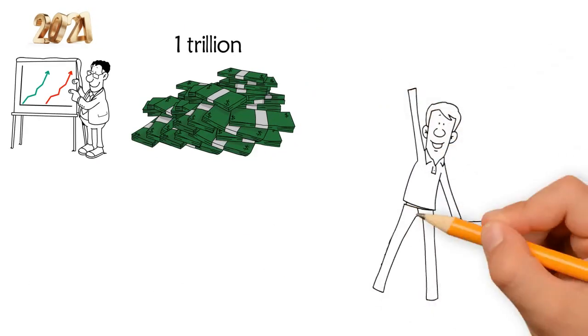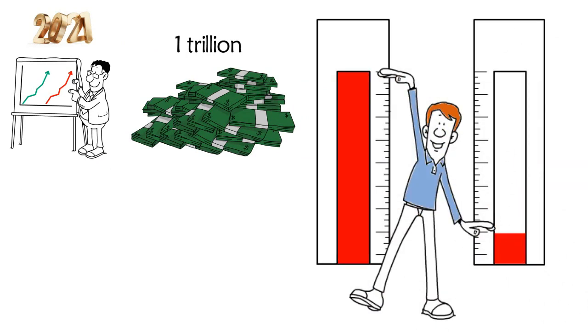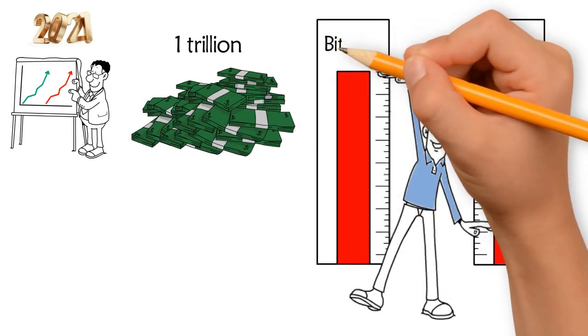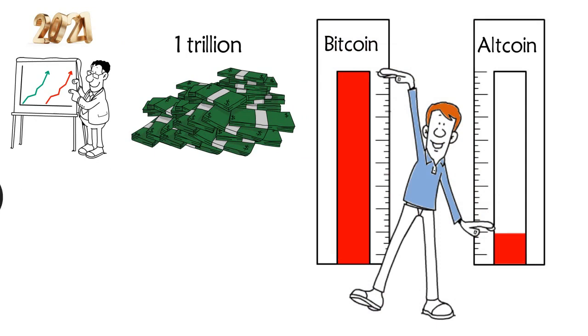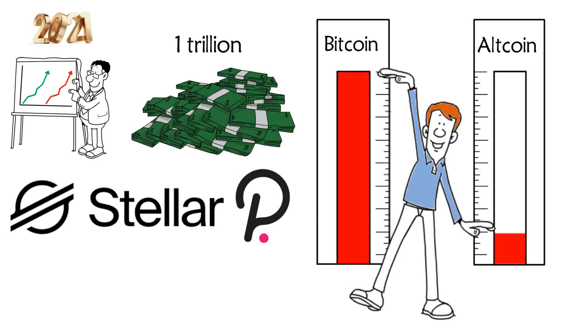Again, the altcoin landscape changed. Though the top positions were held by Bitcoin, followed by Ethereum and a stablecoin Tether, other coins which emerged in the scene during the year include Polkadot, Stellar, and Chainlink's LINK.